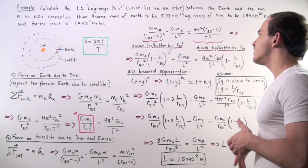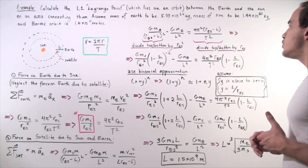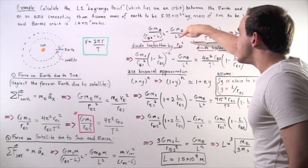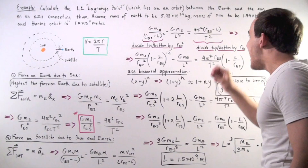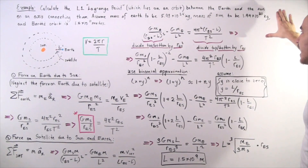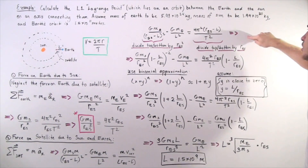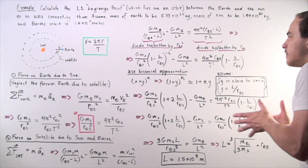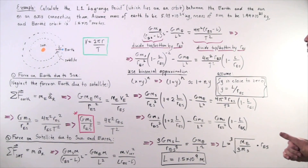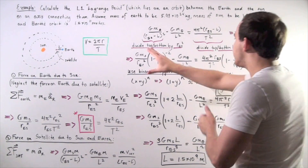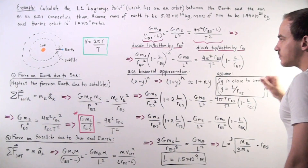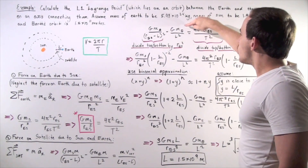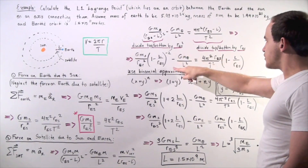So now we need to do a little bit of mathematics. We divide this term top and bottom by the radius of the Earth's orbit around the Sun to simplify things. This term becomes a form with a negative 2 exponent on top, while this other term stays the same, and this term is simplified accordingly.